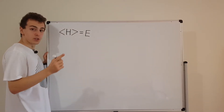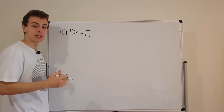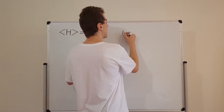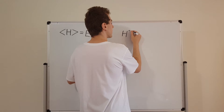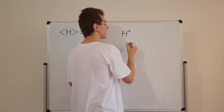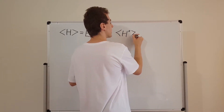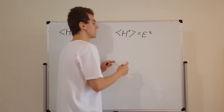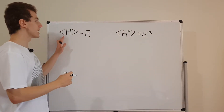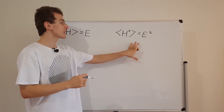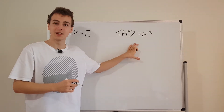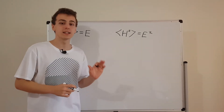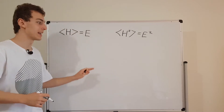And what we also found is an analogous relationship for H squared. So H squared — if we take the expectation value of that — that's E squared. So this is an analogous relationship, and it's actually a very special relationship for stationary states. And it's going to allow for a very useful cancellation that we're going to see in about a minute.